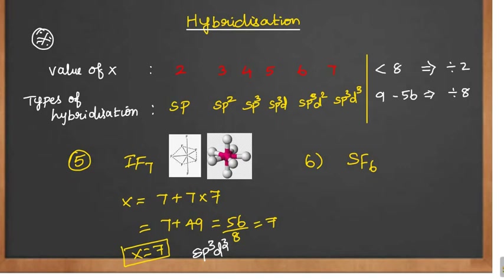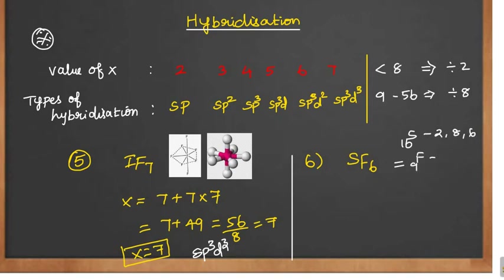You can find it out very easily. If you get this type of question in the NEET exam, it will be very easy. Please work out at home and make it very familiar. Next: SF₆. Sulfur has atomic number 16, so 2, 8, 6 — outermost electron is 6. Fluorine is 2, 7 — outermost electron is 7.